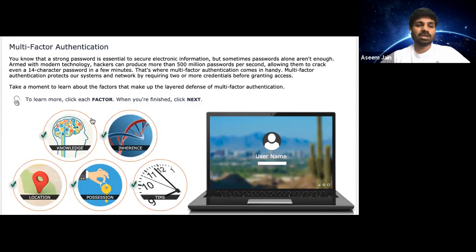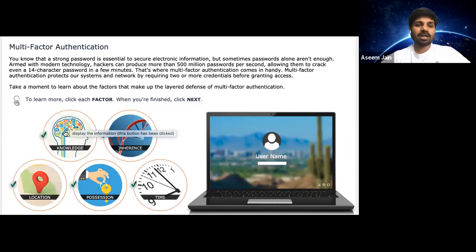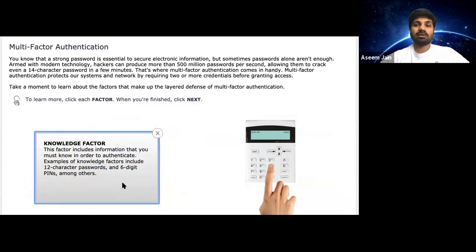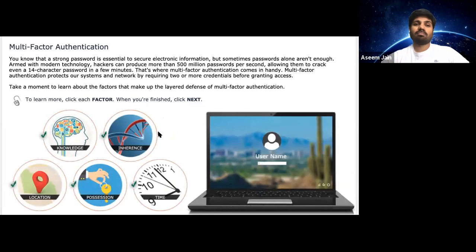So let's look at the other ways of authentication. Apart from your password, the second factor is the knowledge factor. This means it can ask you for a phone PIN, an RSA PIN, or personal questions like when you got married or your birthplace — something which you know about yourself.